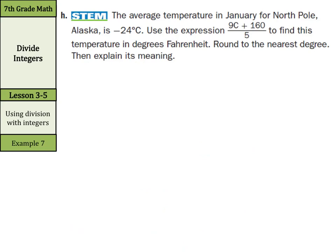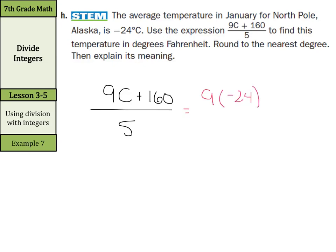As we look at our word problem — yes, we can solve word problems — the average temperature in January for the North Pole in Alaska is negative 24 degrees Celsius. Use the expression (9C + 160) ÷ 5 to find this temperature in degrees Fahrenheit. Round to the nearest degree, then explain its meaning. Let's start off by rewriting the expression: 9C plus 160 divided by 5. And our Celsius temperature here is negative 24. So make that substitution in: 9 times negative 24 plus 160 divided by 5.